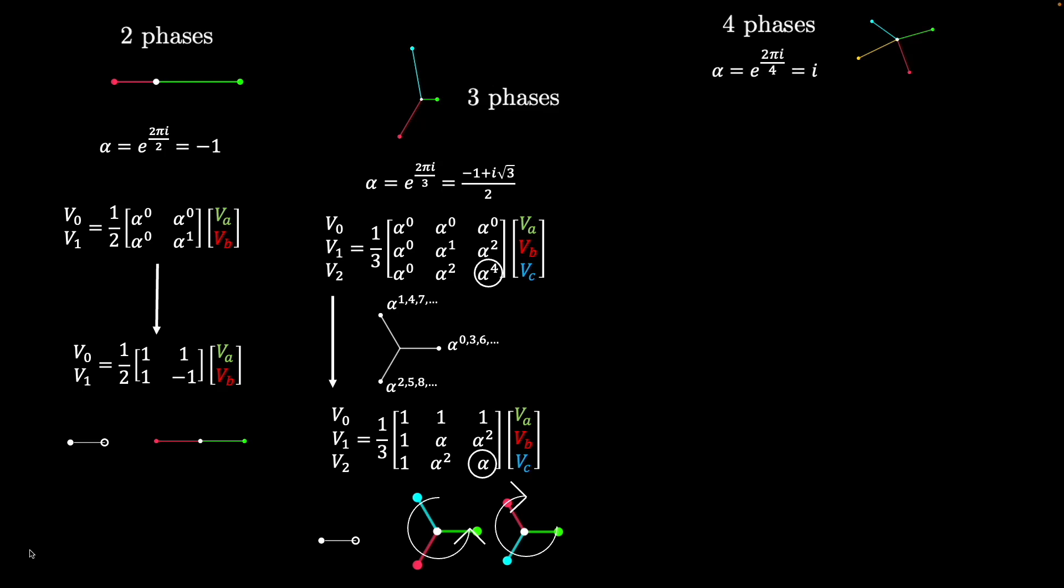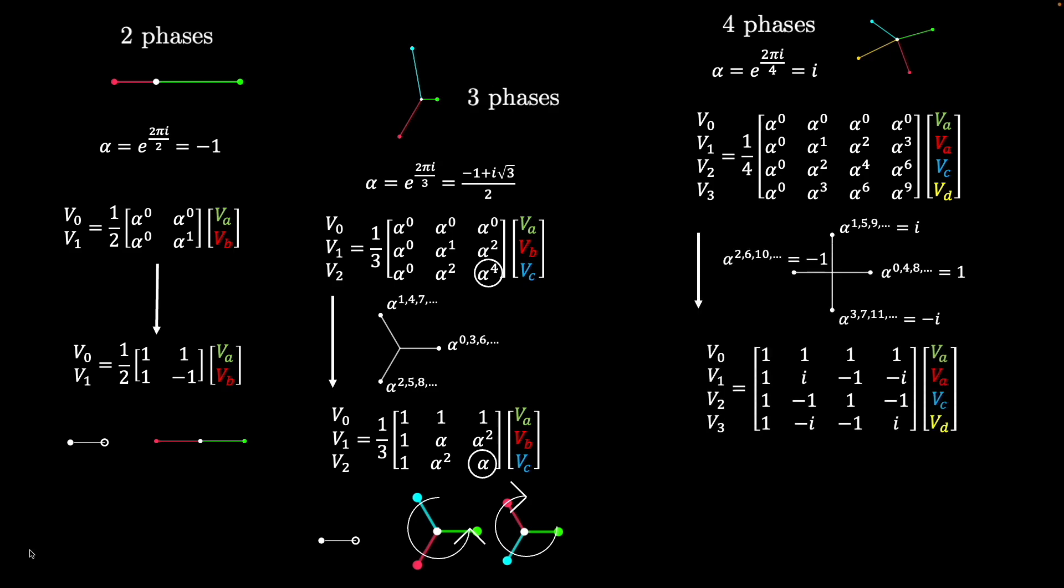For four phases, the same pattern is repeated. Alpha is equal to one quarter of a turn around the complex unit circle, which is just the imaginary number i. The transformation matrix measures zero, one, two, and three times the fundamental speed of the system. Here again, the powers of alpha can be reduced to simpler terms. The V0 component tells a similar story as before, giving the phasor that connects to the center of the system. The V1 component gives a measure of the positive rotation in the system, similar to the three-phase case. The V2 component this time gives a set of vectors that are bipolar, just like in the two-phase case, and there is no specific rotation direction associated with this component. The V3 component ends up being equivalent to the negative rotation component of the system, similar to what V2 was in the three-phase case.